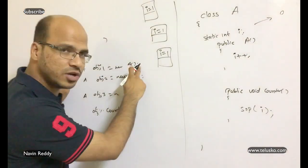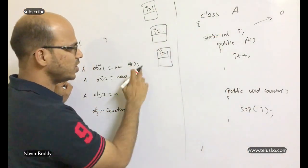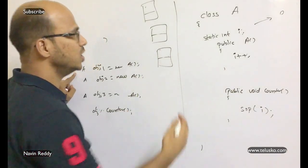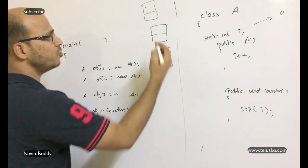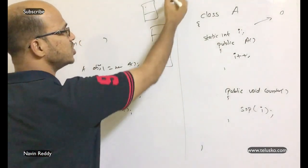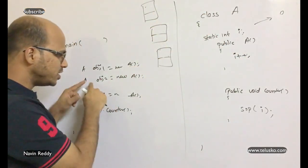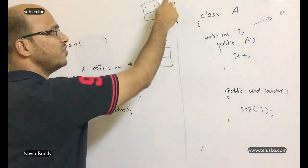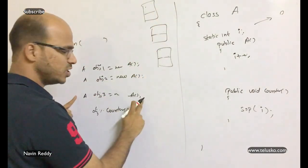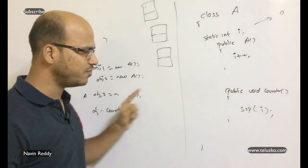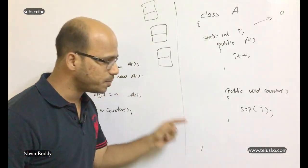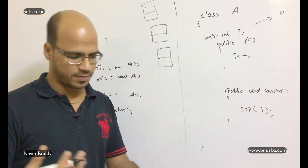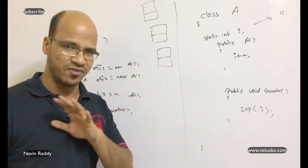That's what is called a class variable, and you create it using the keyword static. Now every time you create an object, the value of i does not belong to the object — it's stored in the method area (stack memory). Initial value is 0. When you create the first object, i++ makes it 1. When the second object is created, it's not reset — it just becomes 2. For the third object, it becomes 3. So when you call obj3.counter, it prints 3, and even obj1.counter will print 3.